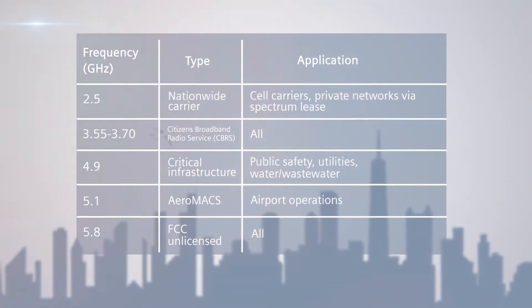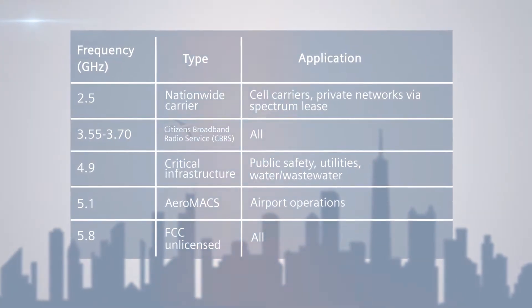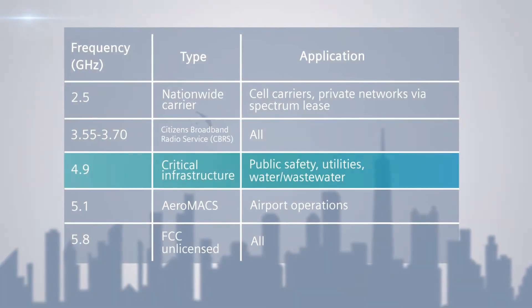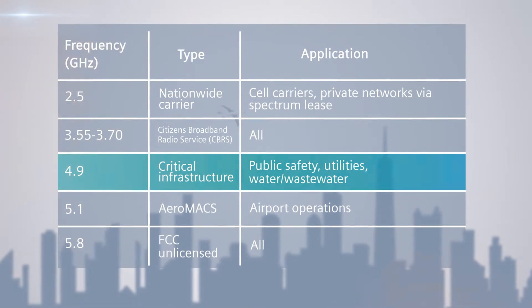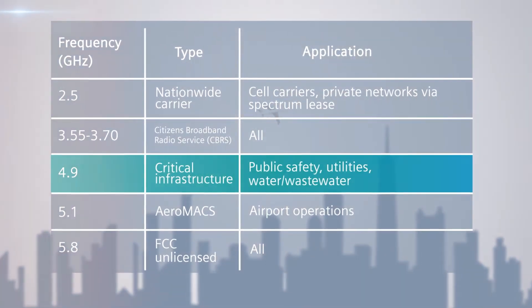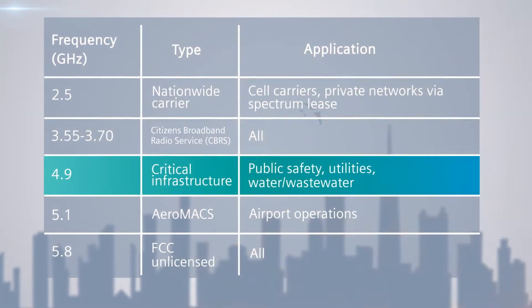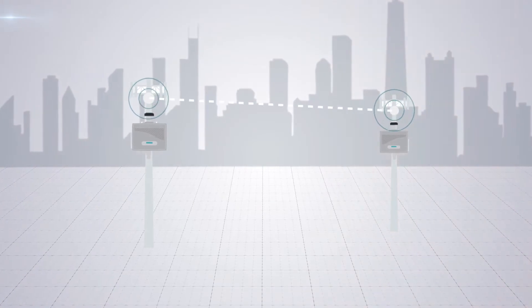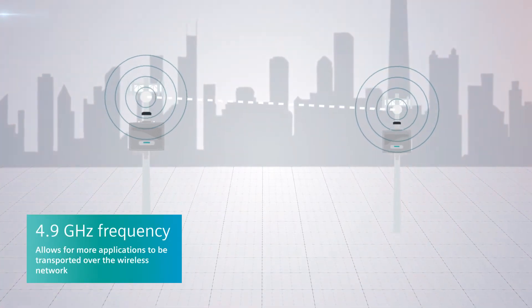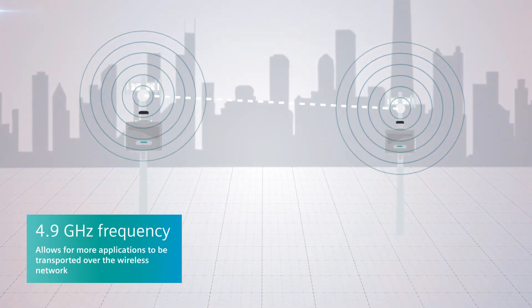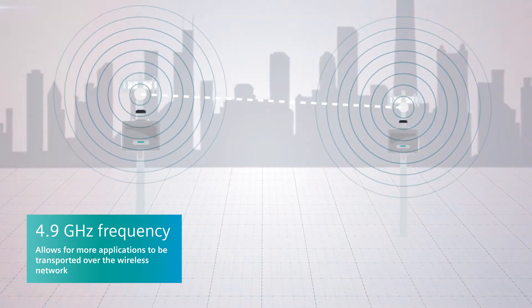With the Siemens Rugged Calm Wind line of products operating in the FCC licensed 4.9 GHz frequency band, throughput and range capabilities are maximized, allowing for more applications that can be transported over the wireless network, meaning you now have access to more information at the click of a mouse.